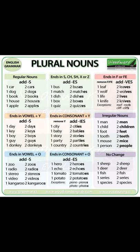If the singular noun ends in -o, add -es to make it plural. Examples: potato → potatoes, tomato → tomatoes. Exceptions: photo → photos, piano → pianos, halo → halos.